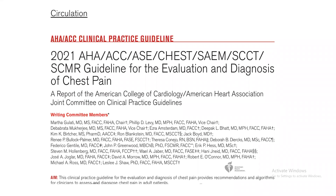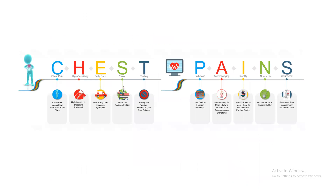This is a new one in American guidelines. American guidelines are notorious for being to the point — they give you algorithms. This is one of the first times we see something as colorful and looking nice, because they are trying to summarize what is new in these guidelines, and they summarize it in the words 'CHEST PAINS.'